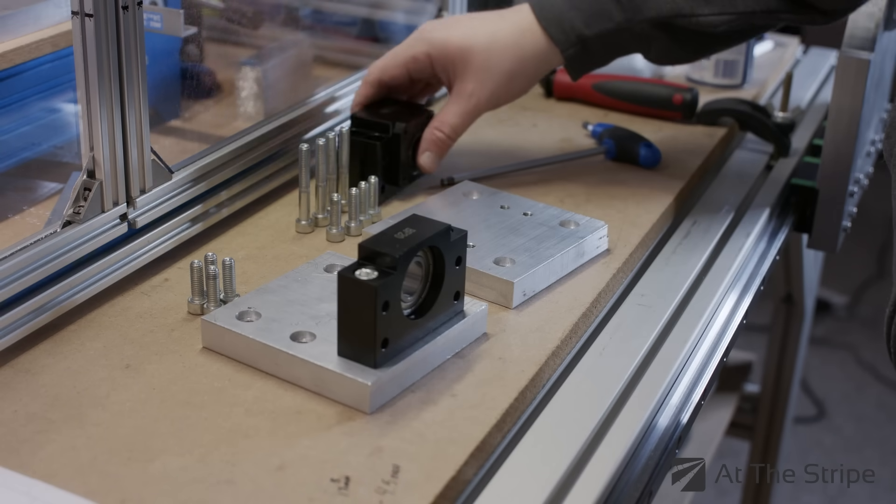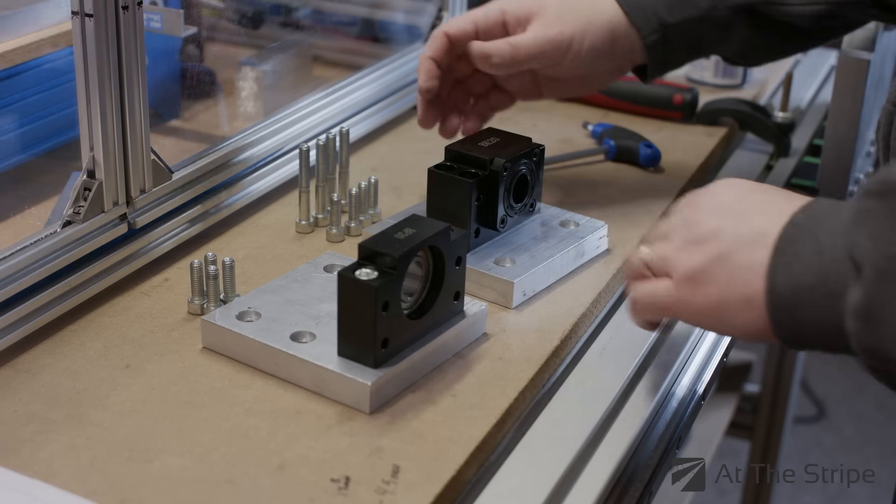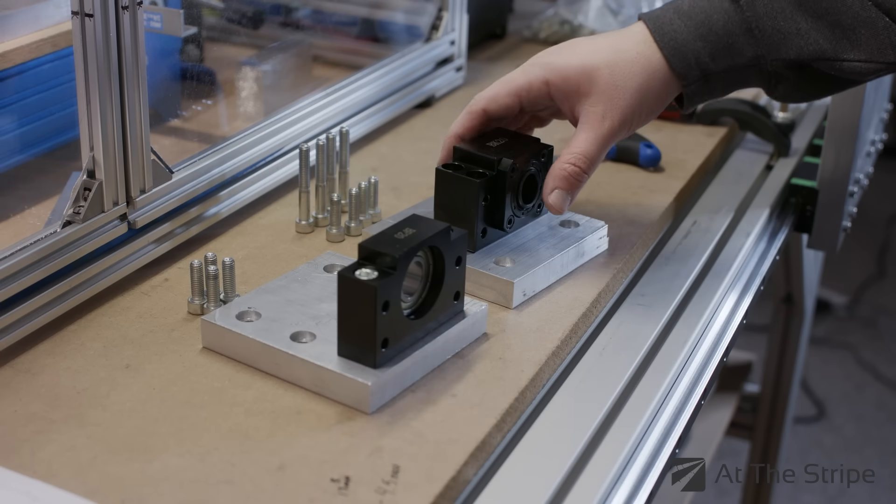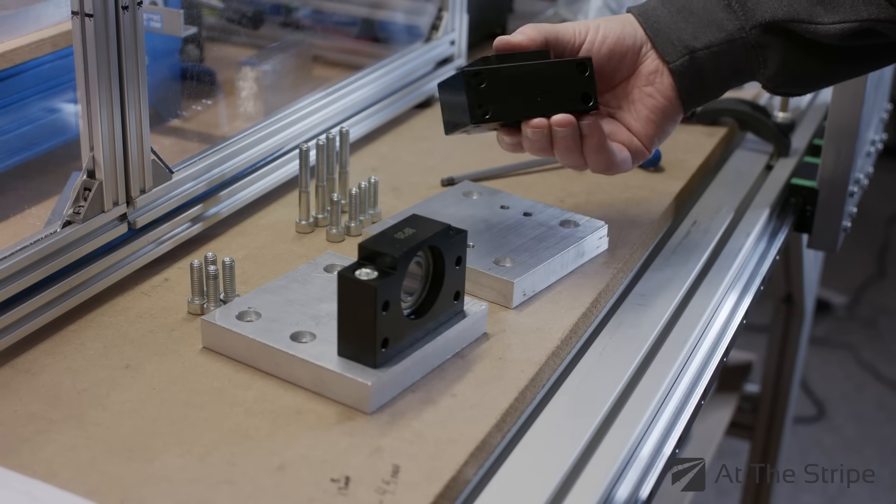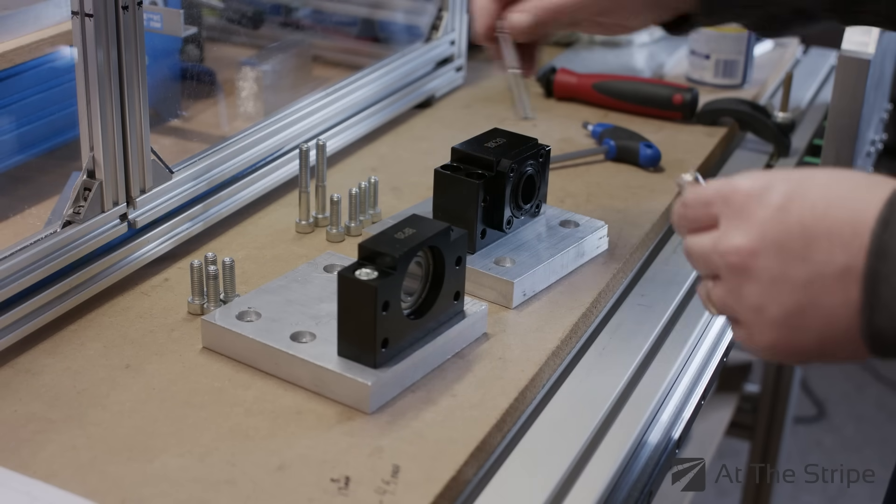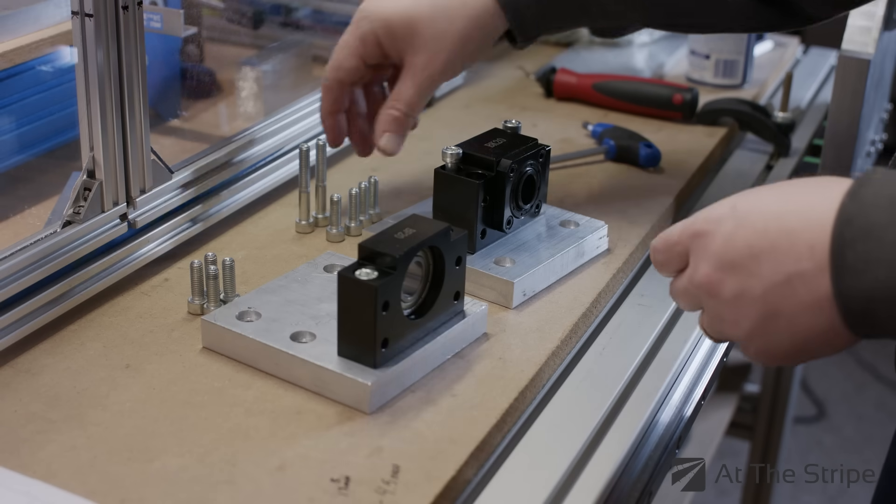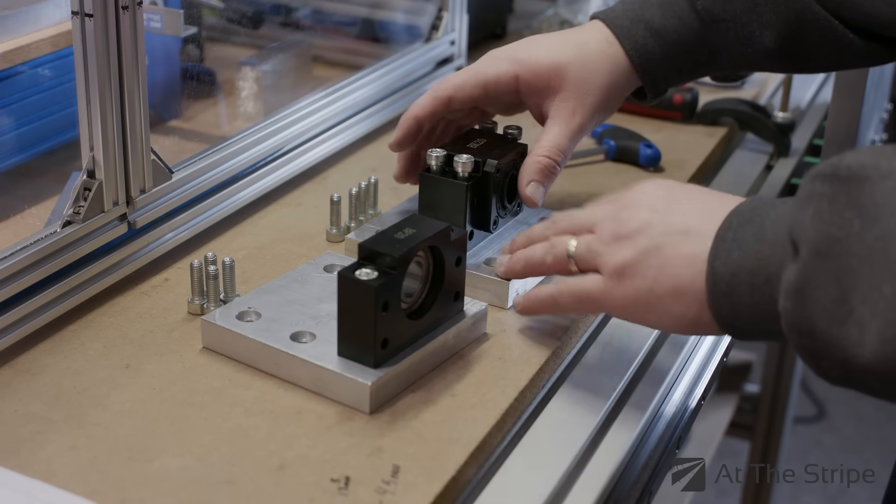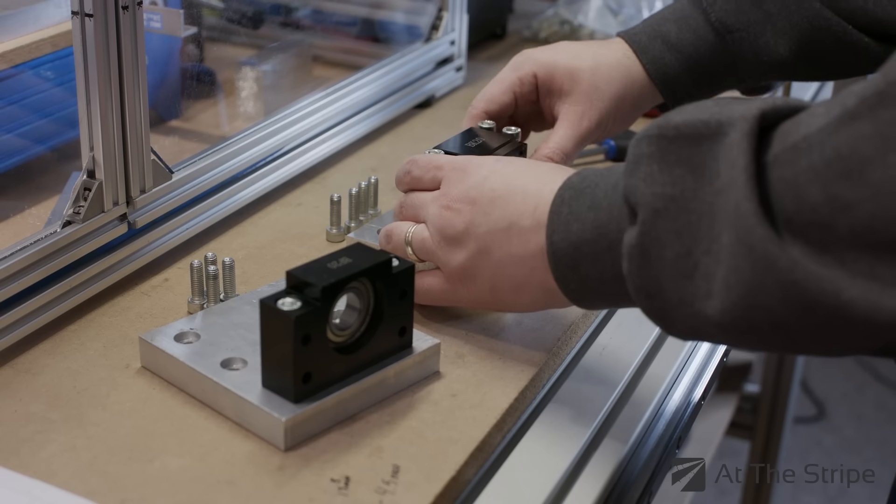Next one is the BK20. Now this is going to be directly the side that's on the motor, so hence why it's got four instead of just the two. All right, so again just dropping these in, make sure that they're lined up.